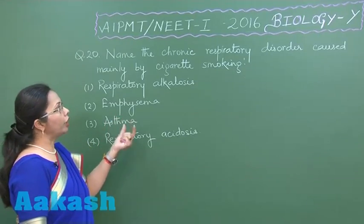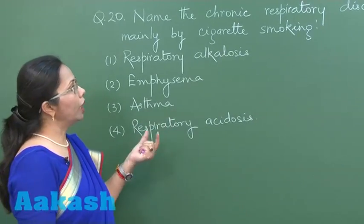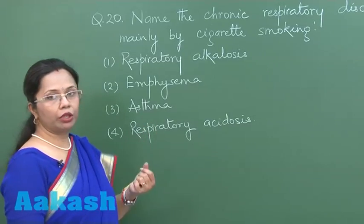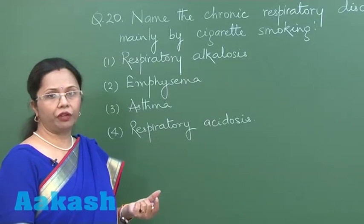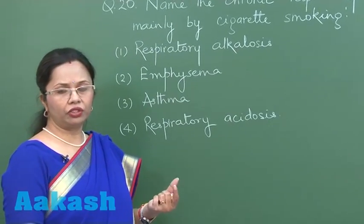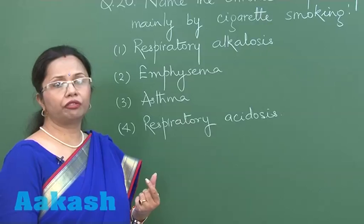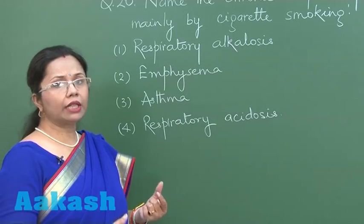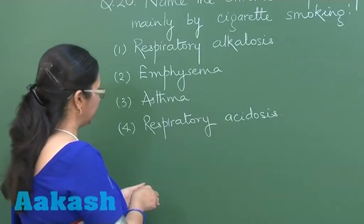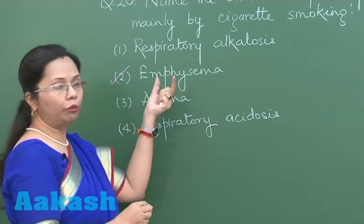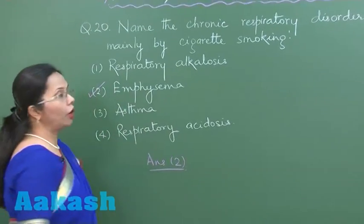Question 20 asks about the chronic respiratory disorder caused by cigarette smoking. When a person inhales smoke, volatile chemicals reach the alveoli, increasing the activity of alveolar macrophages. These macrophages secrete proteases which digest the alveolar wall, decreasing respiratory surface area. This irreversible, debilitating condition is called emphysema. So option number two, emphysema, is the correct answer.